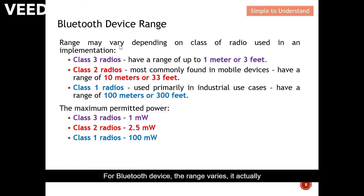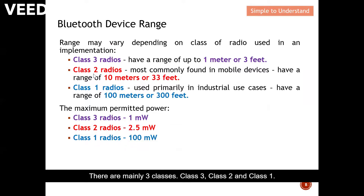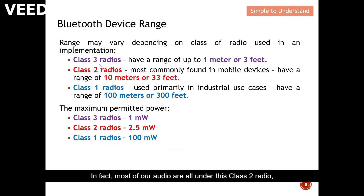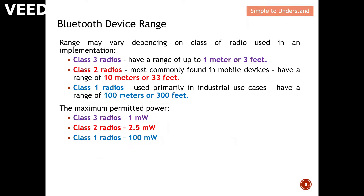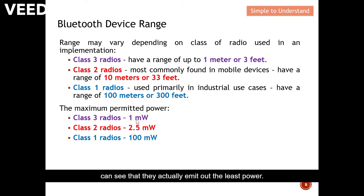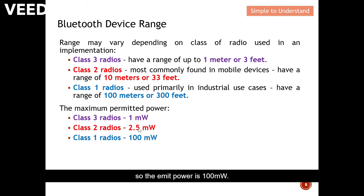For Bluetooth devices, the range varies depending on the class of radio used. There are three classes: class three, class two, and class one. Class three has the least range — only up to one meter. Class two is the most common, covering most of our audio devices, with an effective range of around 10 meters. Class one is mainly for industrial use, covering up to 100 meters. Bluetooth varies its range by varying transmission power — class three emits the least power, followed by class two, while class one emits 100 milliwatts to cover 100 meters.